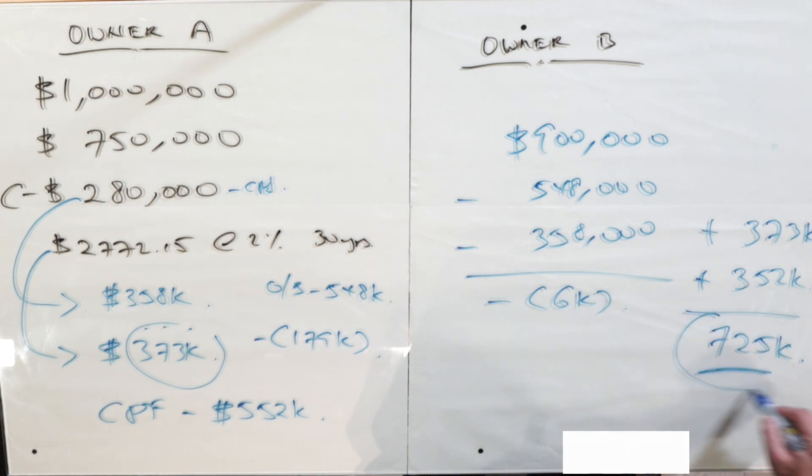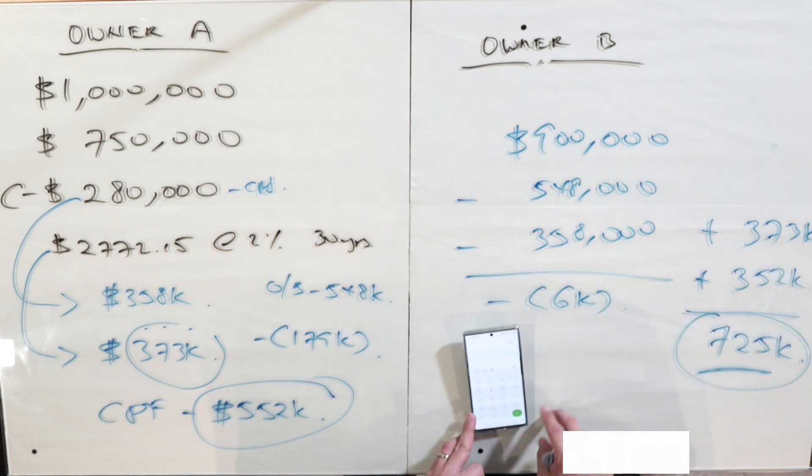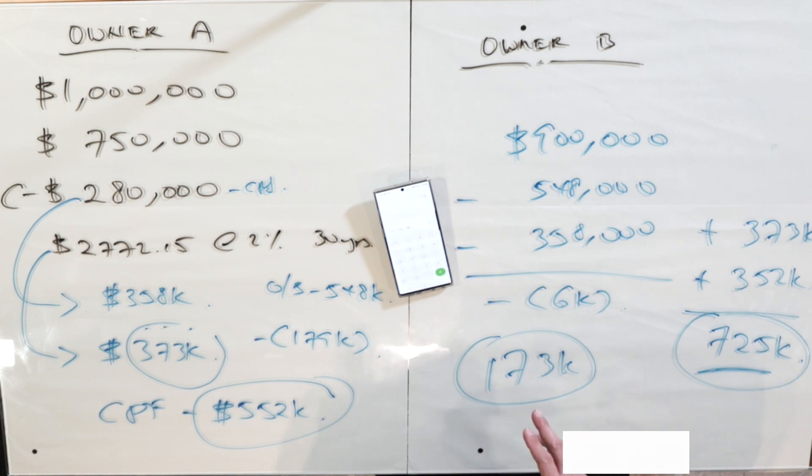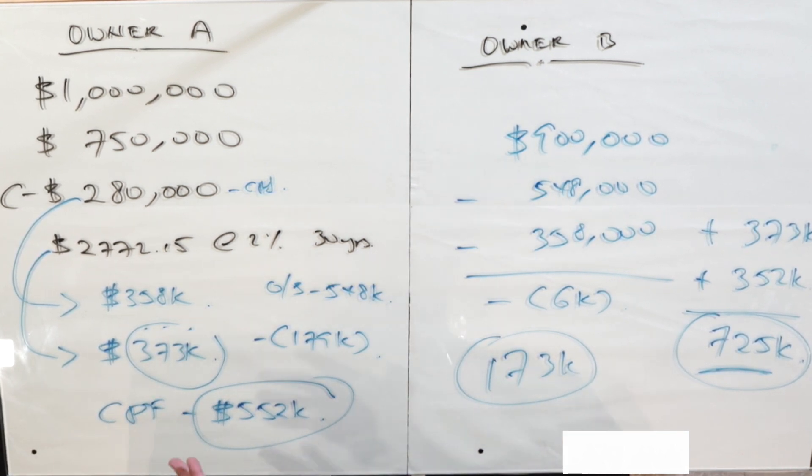So you can see this is a vast difference. We're talking about a difference of $173,000 that owner B would have in his CPF in the next 10 years versus owner A. Right now, if owner A sells it even at a profit of $1.1 million, there's no profit because all goes down to CPF. At the end of the day, he actually has $173,000 less than the person that purchased a property using cash.